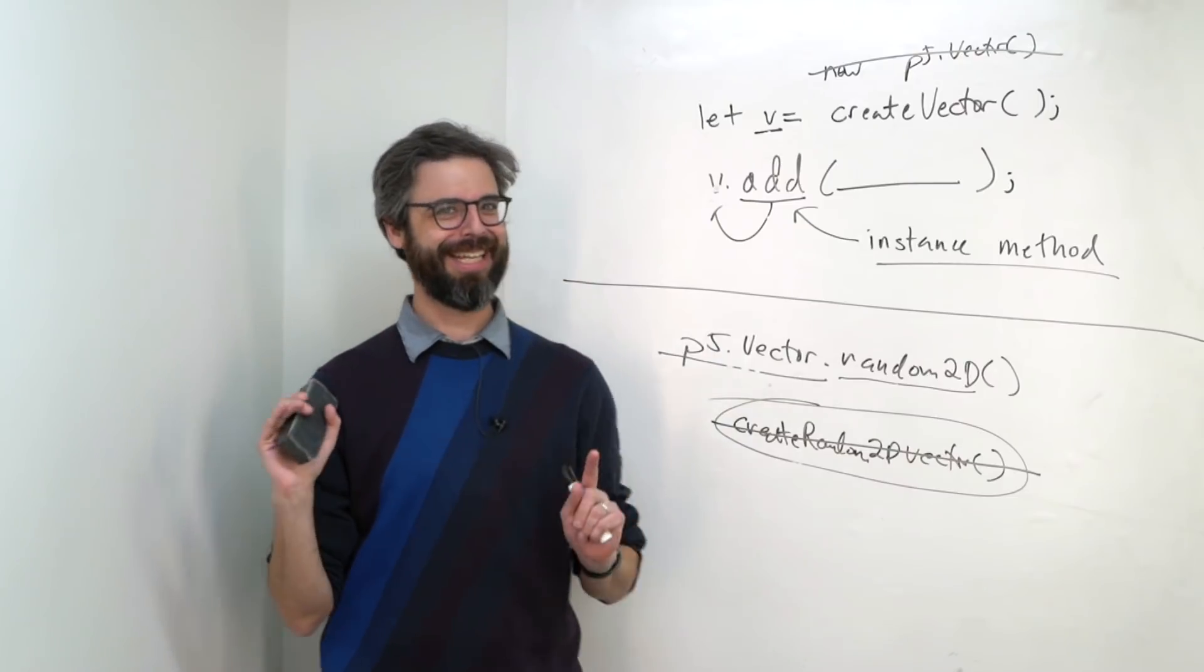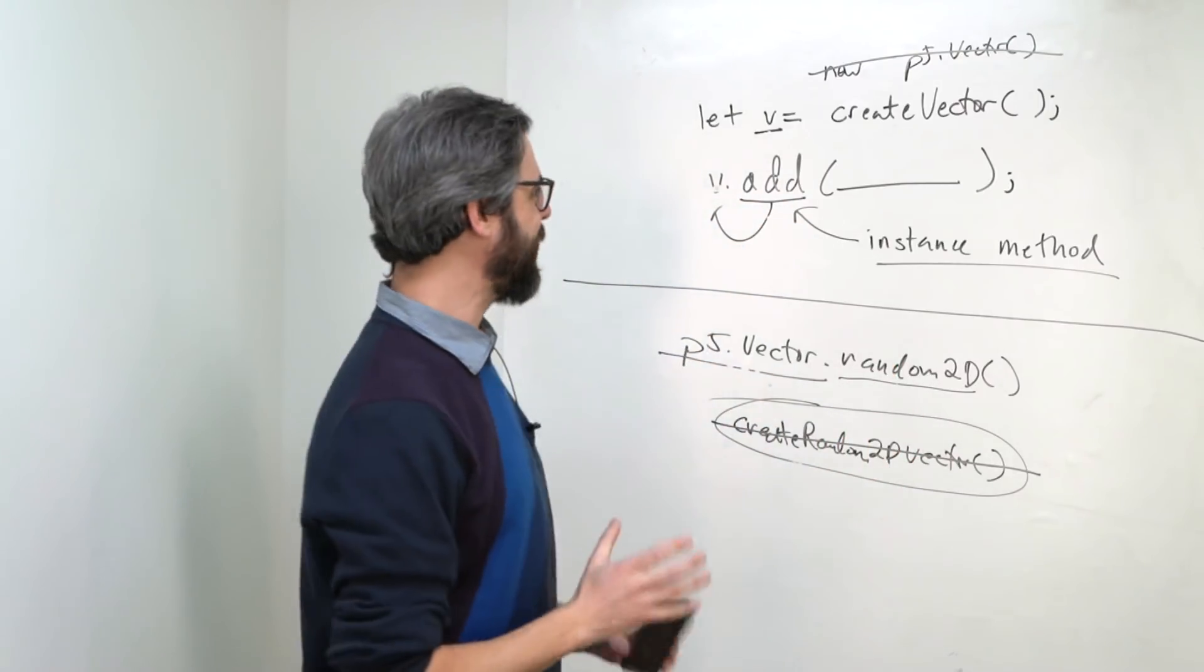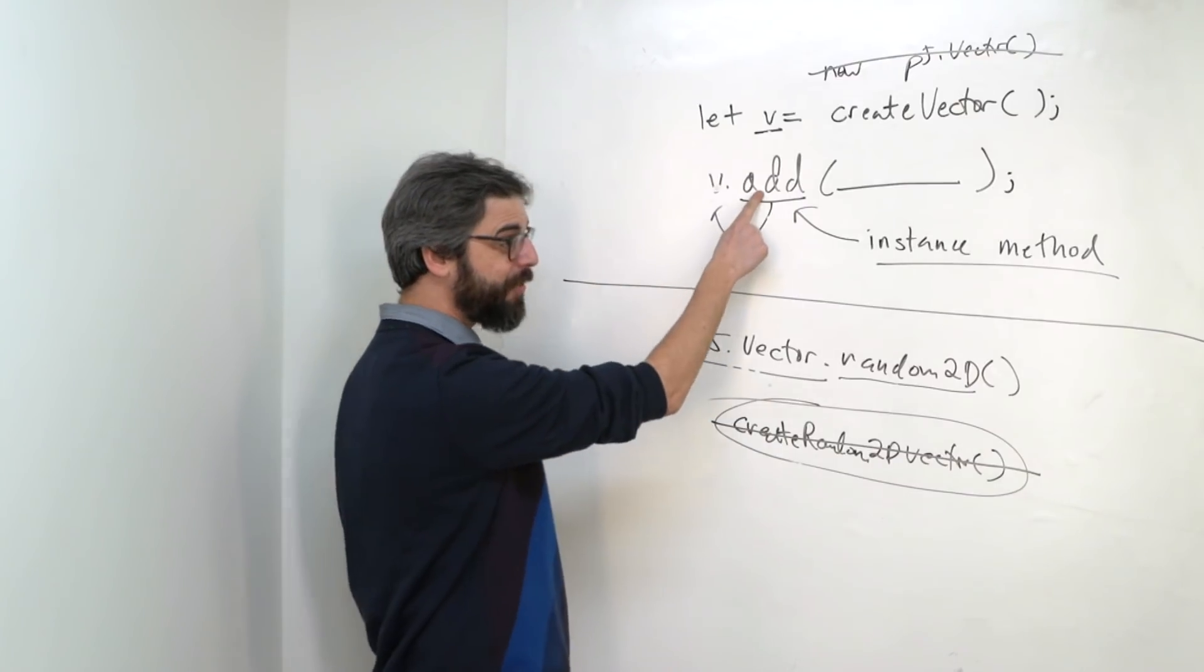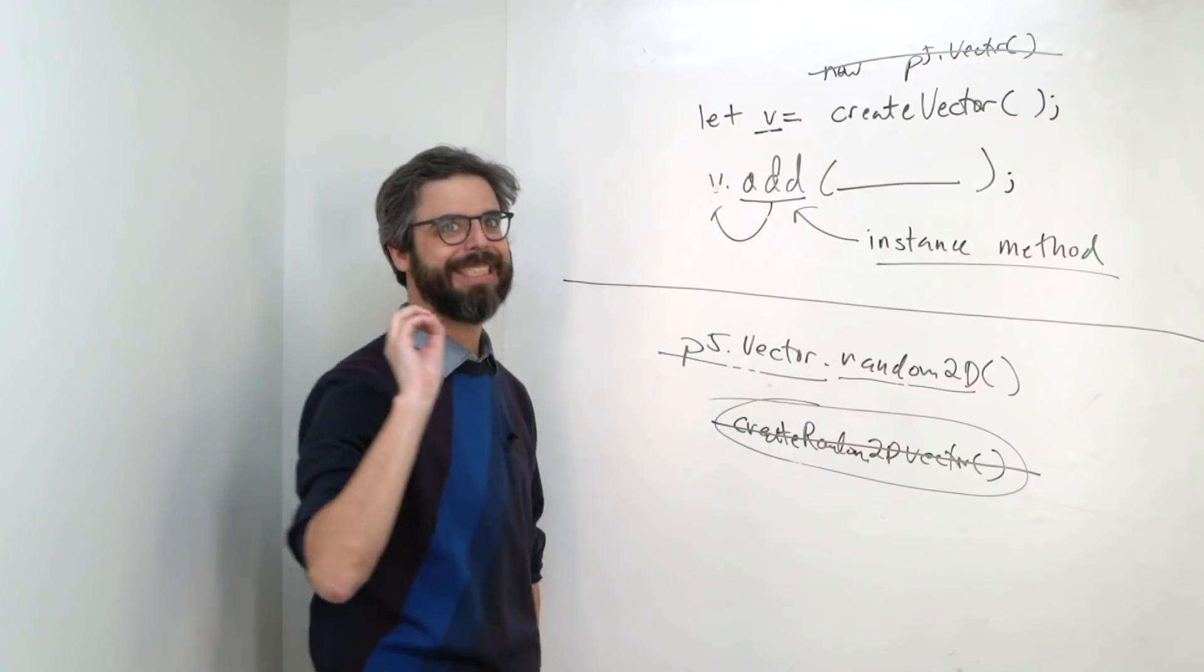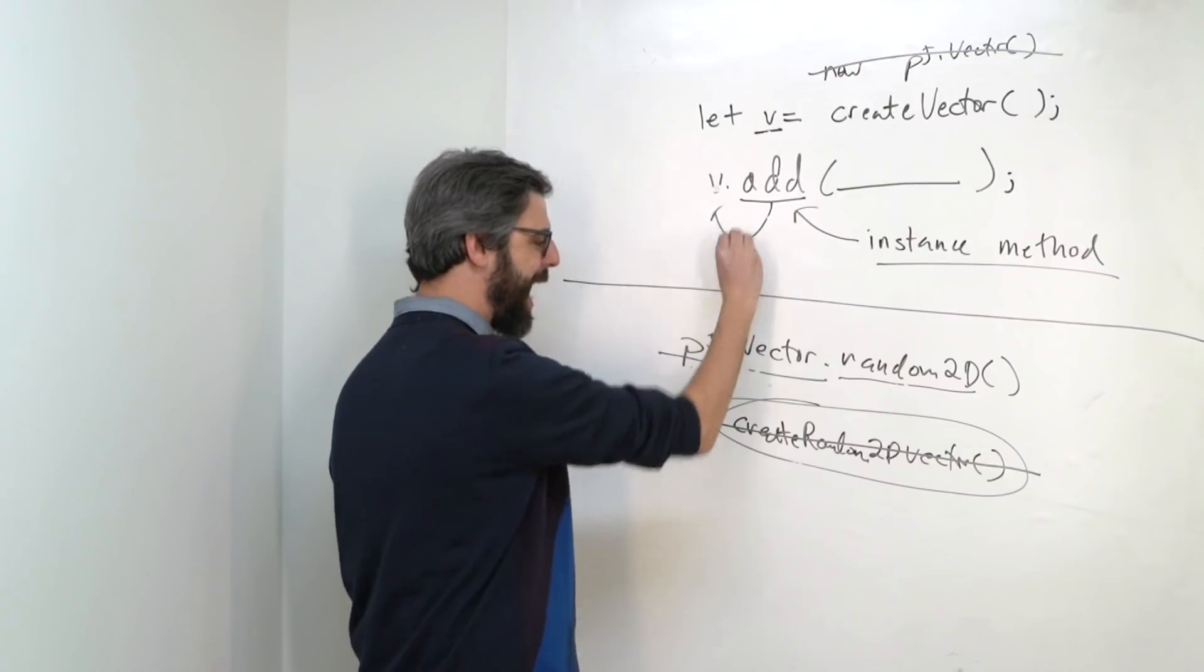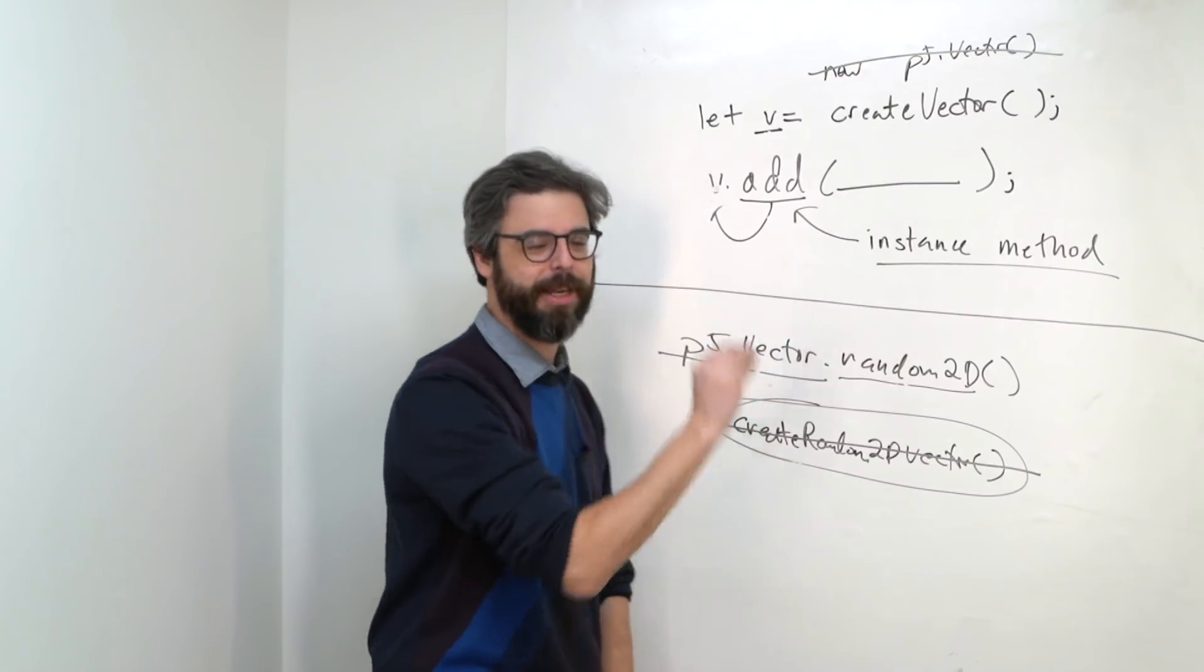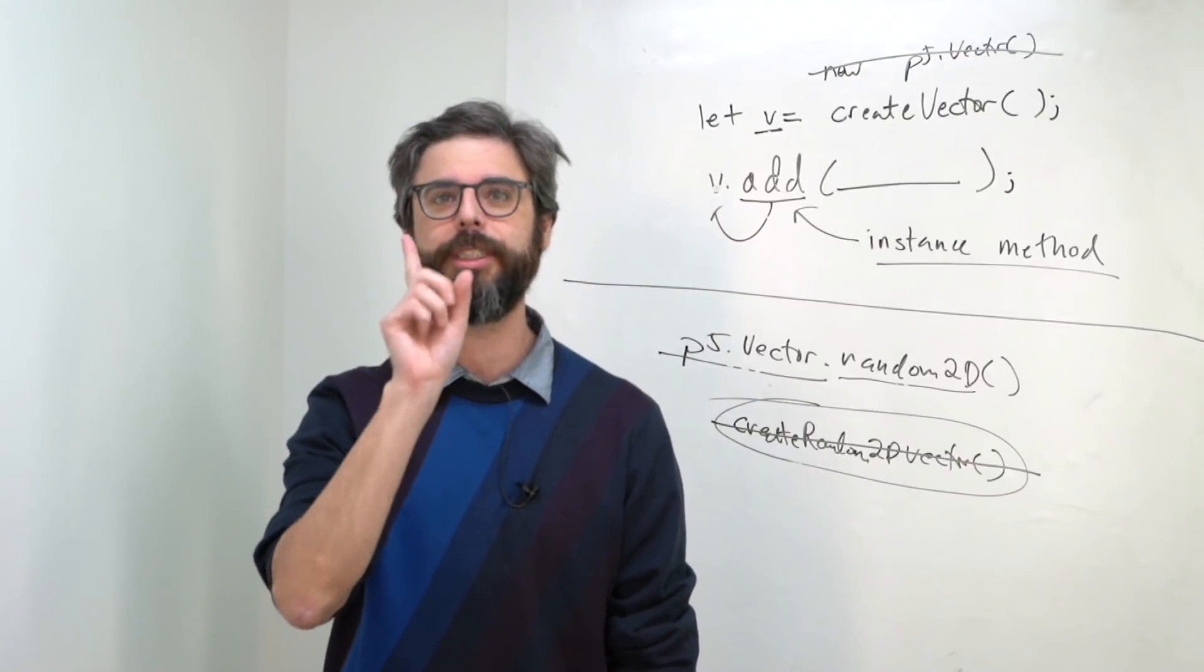But I'm not done yet. One of the weirder things about working with p5 vector is there are both. This is an instance function add, a static function random2d. But there also is a static function add. So some of the functions have both instance and static versions of the same function. So I want to look at a practical example of why I might want to use one versus the other.